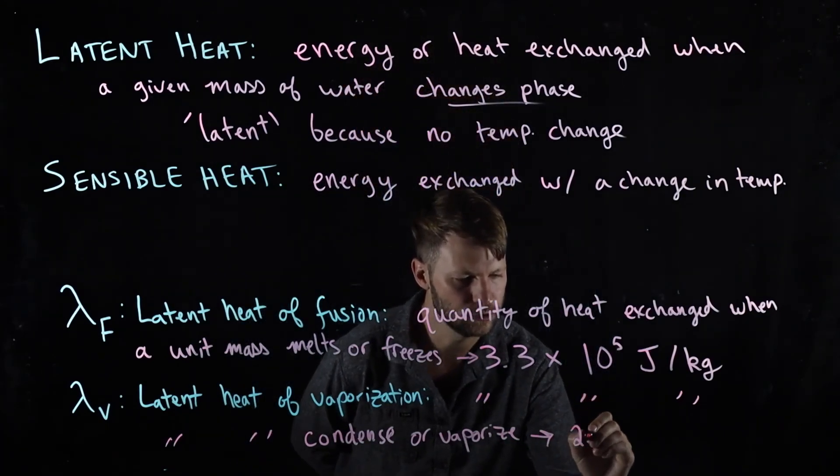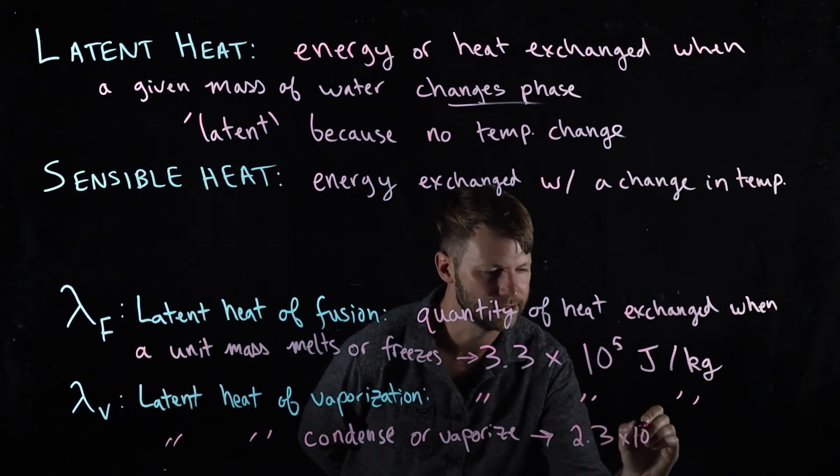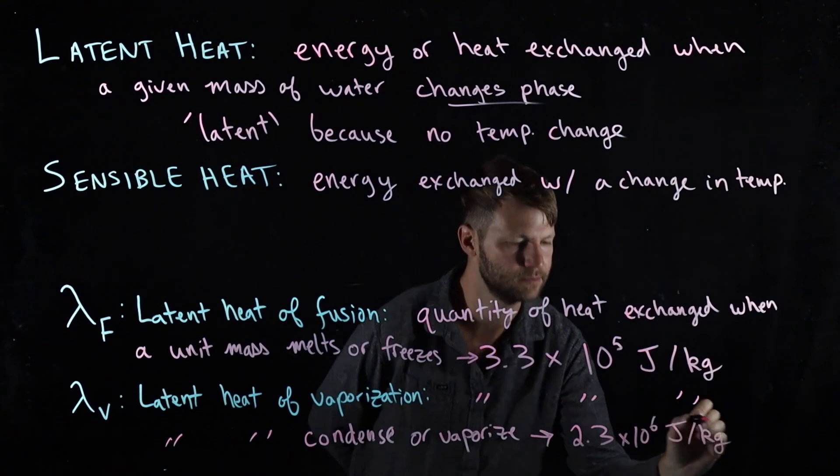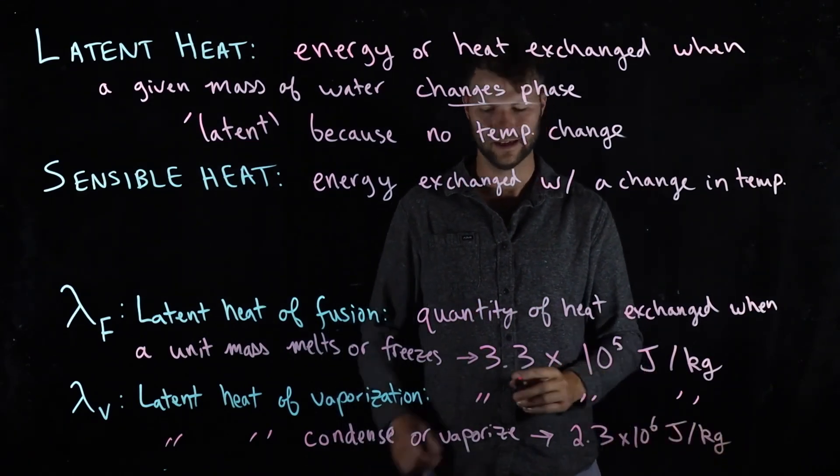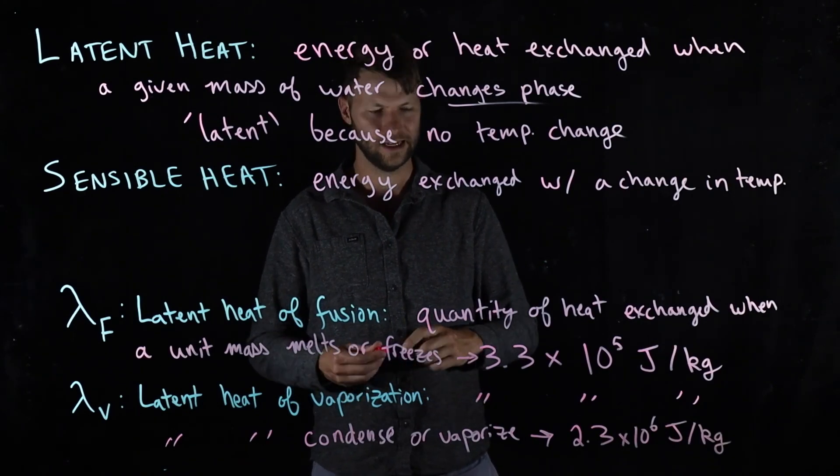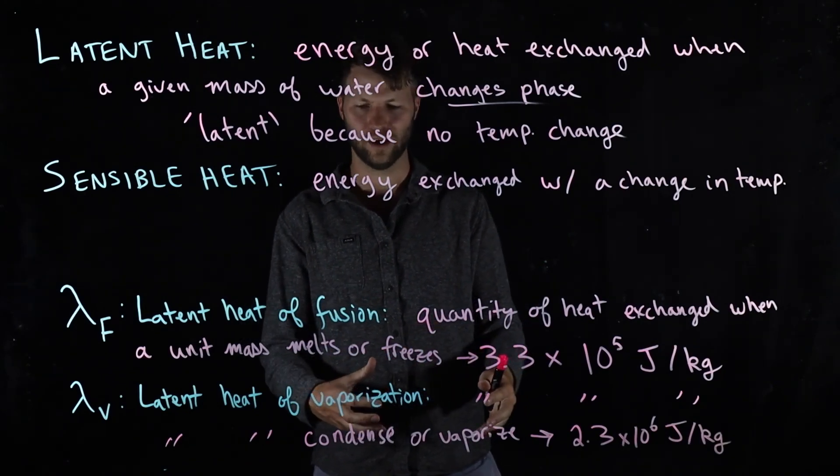It's 2.3 times 10 to the sixth joules per kilogram, and this is a process that's happening at about 100 degrees Celsius. So it's taking 2 million joules to take an amount of liquid water and then cause it all to boil away.